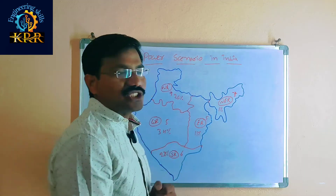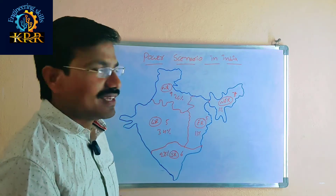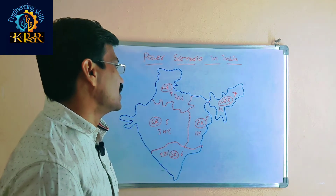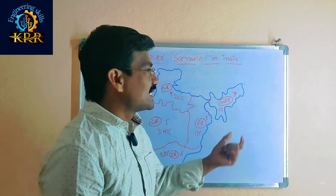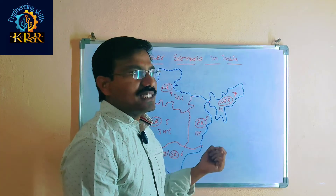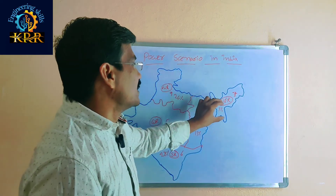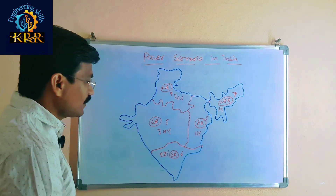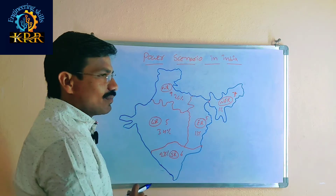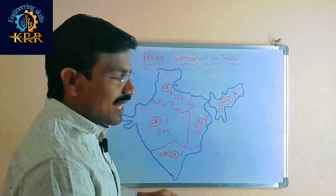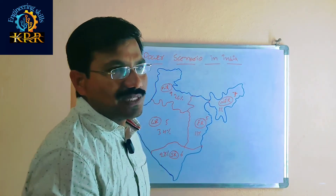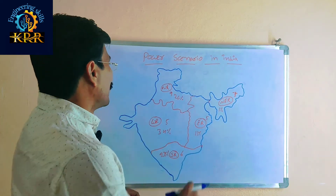In the East region, there are 5 states. In the North East region, there are 7 states and only 1% of power generation is generated. The North region coordination is available in New Delhi, West region in Mumbai, Southern region in Bangalore, East region in Kolkata, and North East region in the North East.